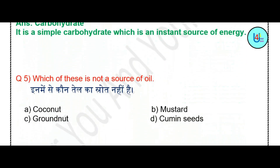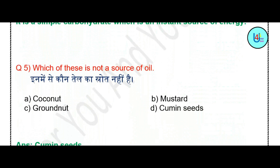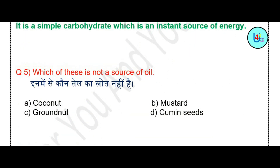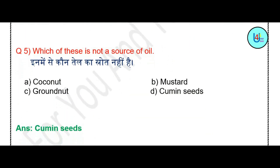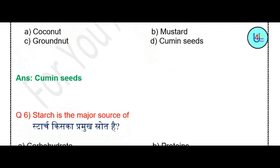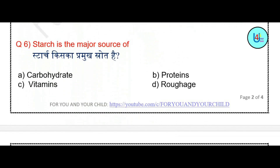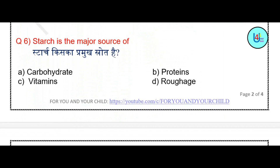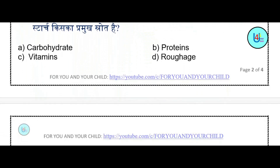Question number 5: Which of these is not a source of oil — coconut, mustard, groundnut, or cumin seeds? The correct answer is cumin seeds.